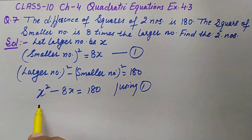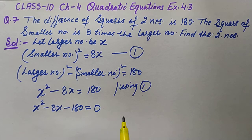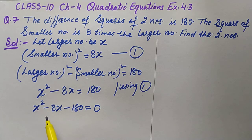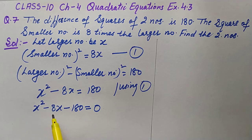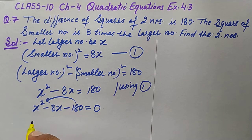Substituting, we get x squared minus 8x equals 180. Bringing 180 to the left-hand side gives us x squared minus 8x minus 180 equals zero. We'll now solve this equation using the factorization method by splitting minus 8x such that the parts sum to minus 8x and their product equals minus 180x squared.